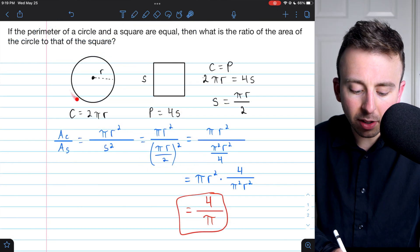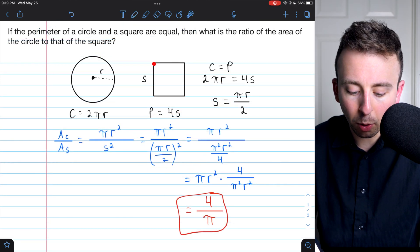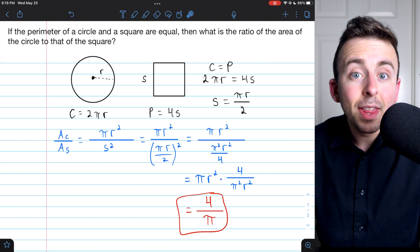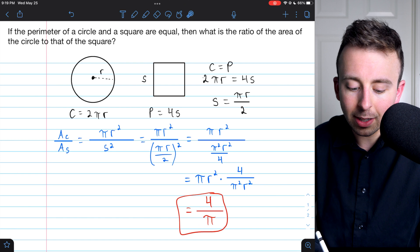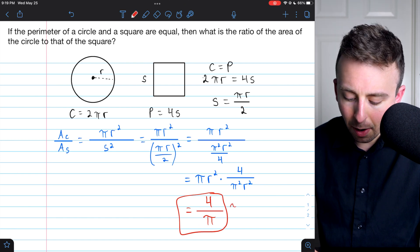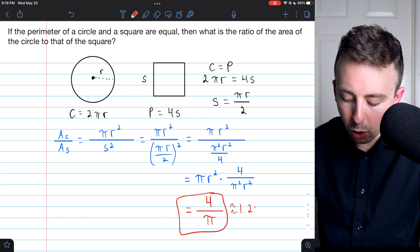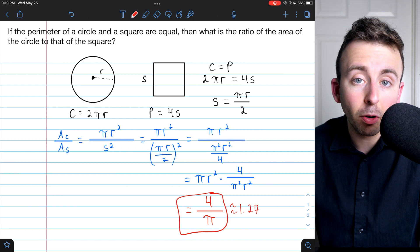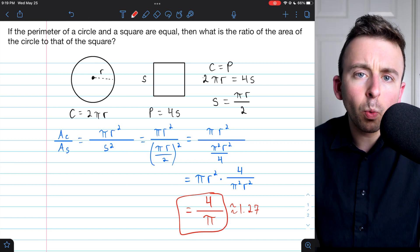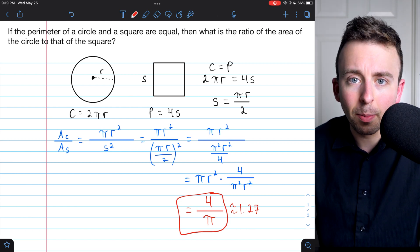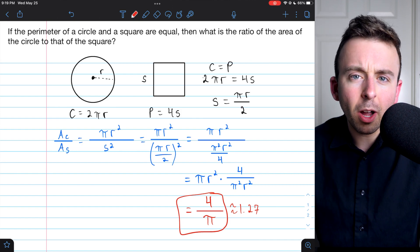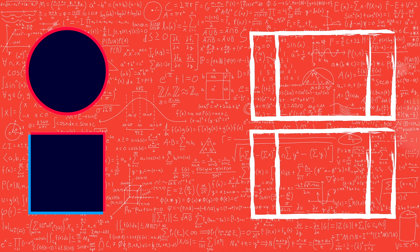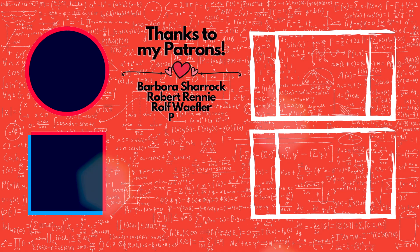So if the circumference of a circle is equal to the perimeter of a square, then the ratio of the circle's area to the square's area is 4 to π. And that is about 1.27, which means the circle's area would be about 1.27 times that of the square. Hope this was helpful. Let me know in the comments if you have any questions.